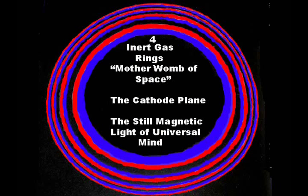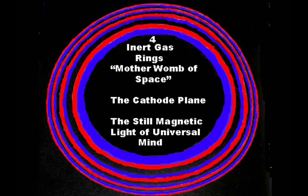The four inert gas rings contain within them all nine inert gases of the spiral periodical table of the octave wave of elements. They are the foundations for all elements. These inert gas rings are two-dimensional planes which bound the dimensionless magnetic cathode plane of the nine cube faces. As pictured here, the inert gas rings represent their cathode condition of maximum expansion, being centered by the mother womb of cold still space.